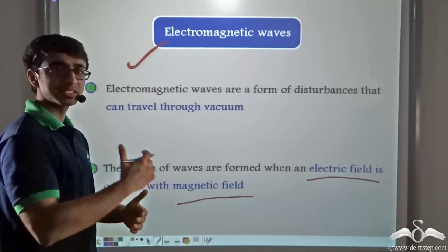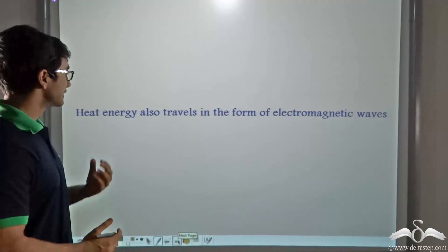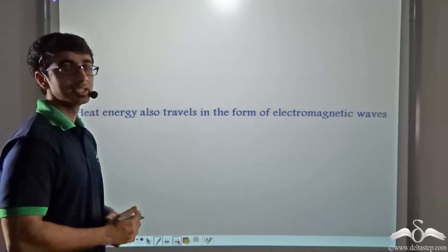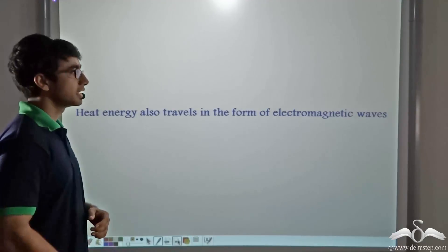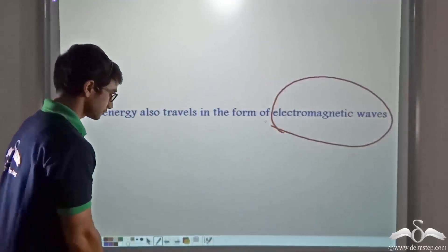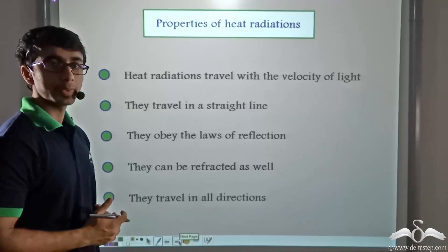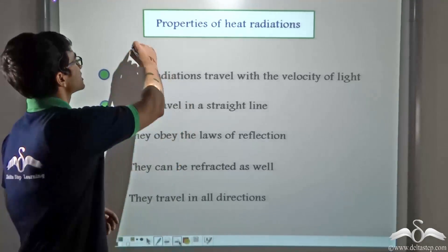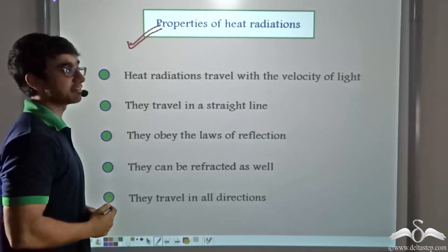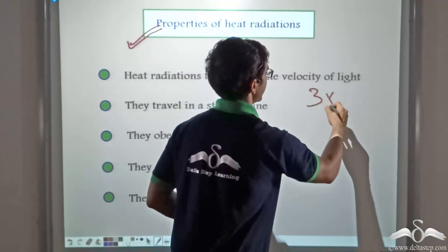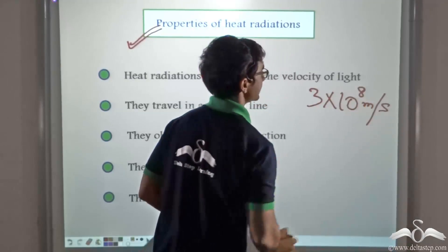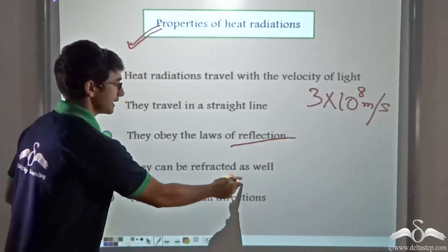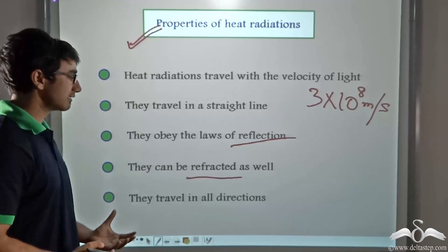So how can we link electromagnetic waves with heat energy? It has been found that heat energy travels in the form of electromagnetic waves, and this is the reason why the radiation of heat energy does not require a medium. This is how heat is travelling from the sun to the earth — in the form of electromagnetic waves. So what else do we know is an electromagnetic wave? Light. So the properties which light has, similar properties are also owned by heat. Heat radiations travel with the same velocity with which light travels — that is, 3 × 10⁸ meters per second. Heat radiations travel in a straight line, obey the laws of reflection as well as refraction, and just like light can travel in all directions.